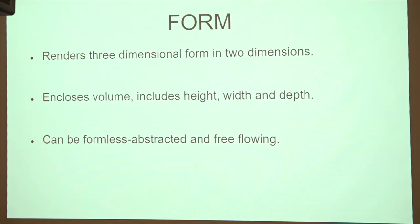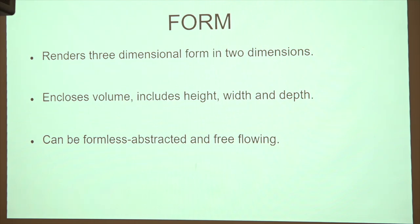Form renders a three-dimensional form into two dimensions. The form is really the heart of the art object. It encloses volume and includes height, width, and depth. For example: a cube, a sphere, a cylinder, a triangle, a pyramid. It can be direct form, or it can be very abstracted and free-flowing. It can enclose a space determined by line, color, value, and texture.